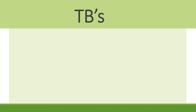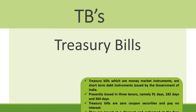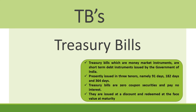The next term is TBs. The full form of TBs is Treasury Bills. Treasury Bills are short-term debt instruments issued in the money market by the Government of India. Presently, they are issued in three tenures: 91 days, 182 days, and 364 days. They are zero coupon securities which pay no interest to the holders, and they are issued at a discount and redeemed at the face value at maturity.